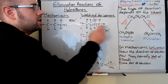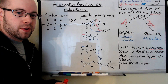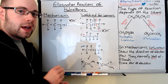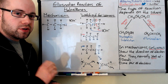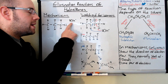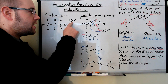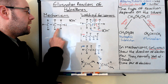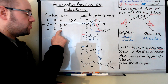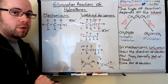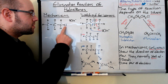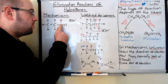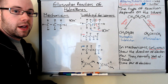In aqueous conditions, the OH acted as a nucleophile — it went for a delta positive carbon or an area of electron deficiency. In elimination reactions, the hydroxide ion acts as a base instead, so it's not going to go for a delta positive carbon. Bases are proton acceptors, so this hydroxide ion is going to go for a proton. In elimination reactions, the hydroxide ion goes for a hydrogen on a carbon that is adjacent to the carbon with the halogen attached to it.